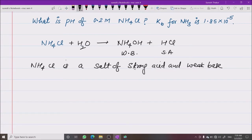So according to salt hydrolysis, pH equals half of pKw minus pKb minus log C. This is the formula.